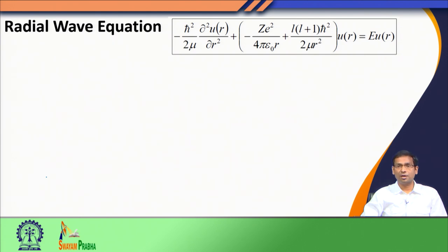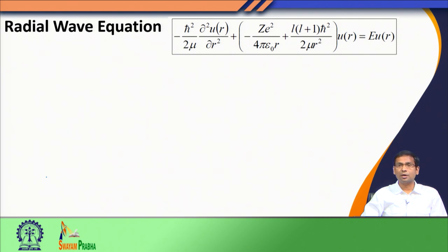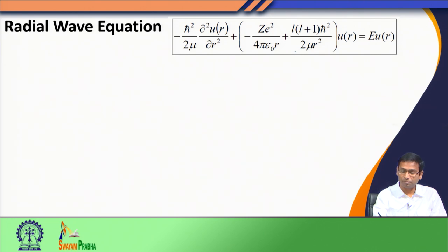We then imposed a separation of variables for the solution of this internal Hamiltonian. We said that the eigenfunction of the hydrogen atom would depend on r, theta, and phi — all three spherical coordinates — and that the eigenfunction be a product of a radial function and an angular function. We used this variable separation on the Schrödinger equation, removed the angular component of the wave function, and introduced a new effective potential which depended on the angular momentum of the electron.